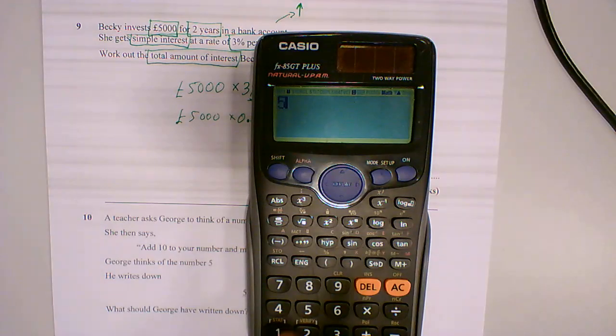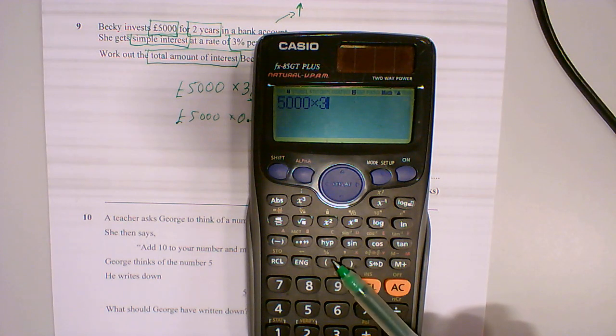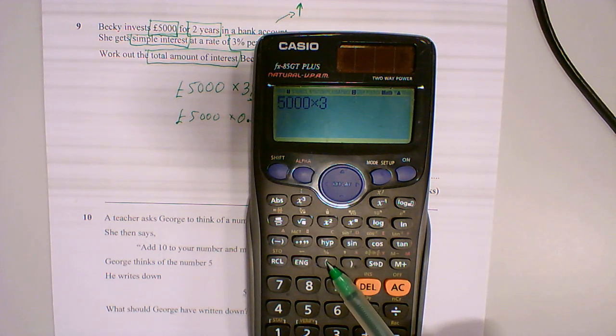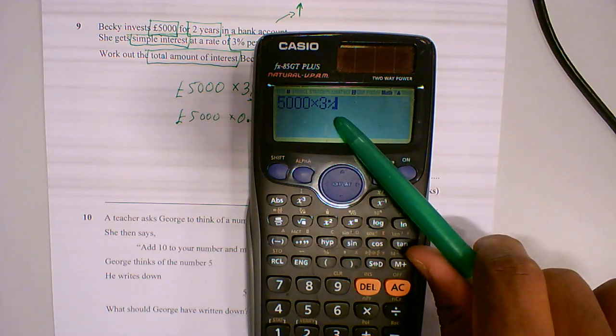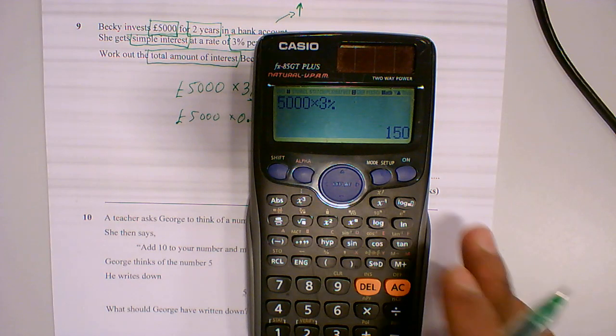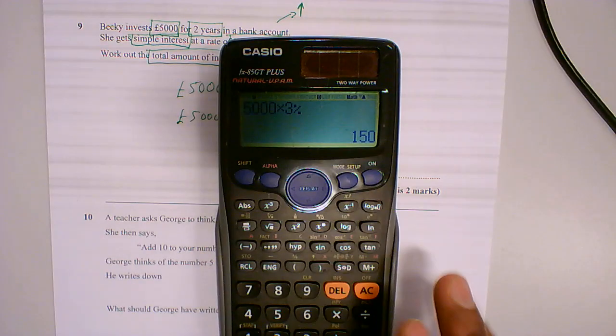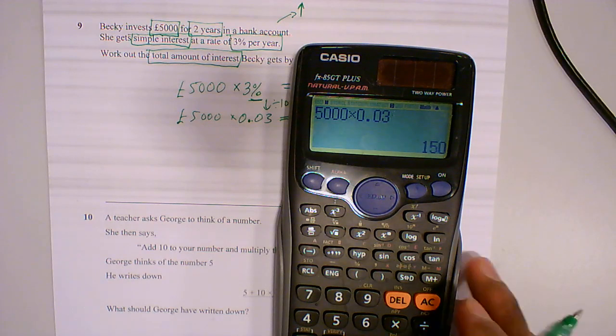Okay, so I'll show you both ways. 5,000 times 3, and notice the percent button is, can you see that above my open bracket? It's in yellow which means I have to press the shift button. I'm going to press shift and then press open bracket. You can see it's now percentage. 3% equals 150. And if you don't remember this, just do 5,000 times 0.03 gives us 150. Same answer.